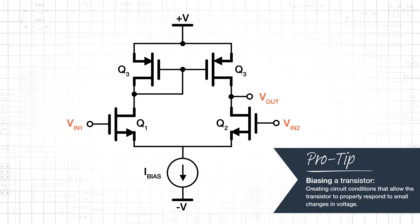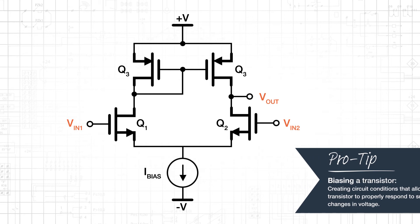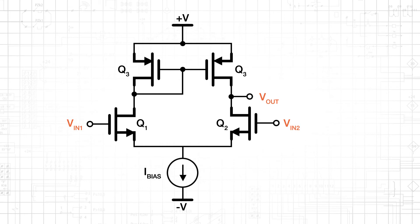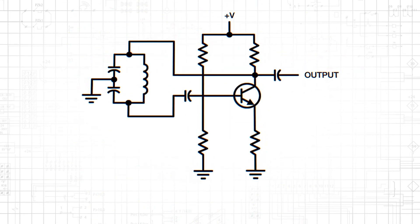Note that the current source IBIAS is biasing the Q1 and Q2 transistors. This circuit, called a Colpitts oscillator, uses a biased bipolar junction transistor to generate a sinusoidal signal.